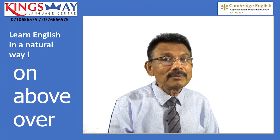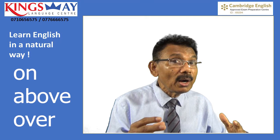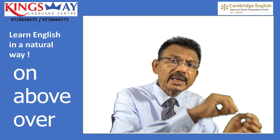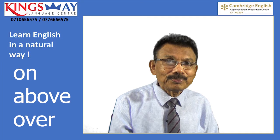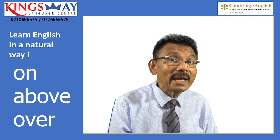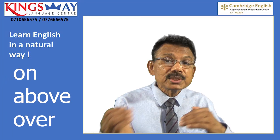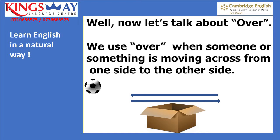I hope you learned that as well. Now it's time for us to learn 'over.' We use 'over' when we are talking about someone or something moving across from one side to the other side — not touching the thing. For example: an aeroplane is flying over the house, or that man jumped over the fence. We use 'over' when someone or something is moving across from one side to the other side.